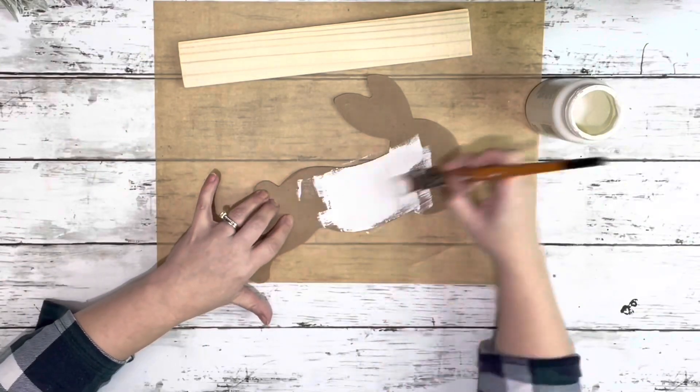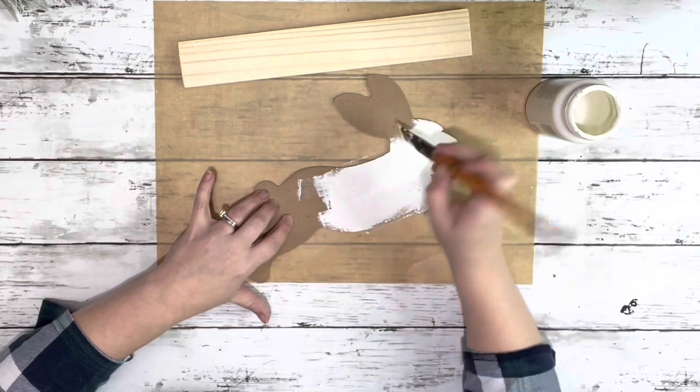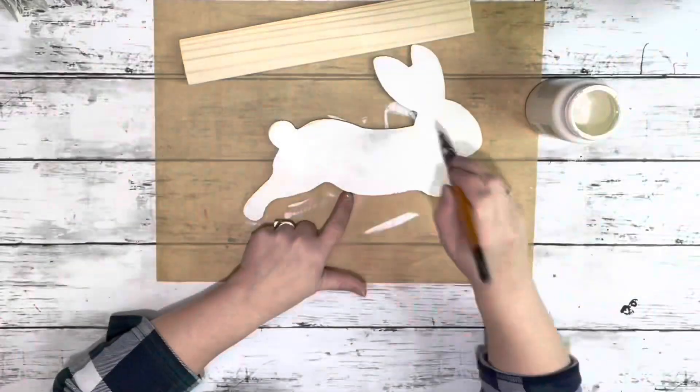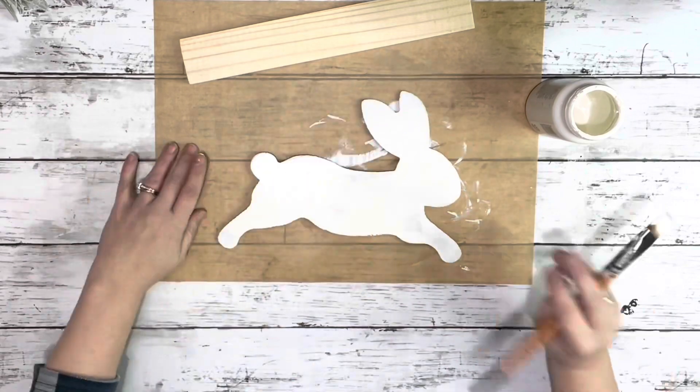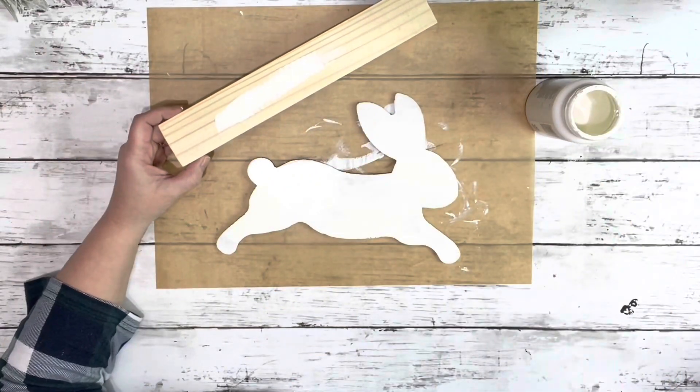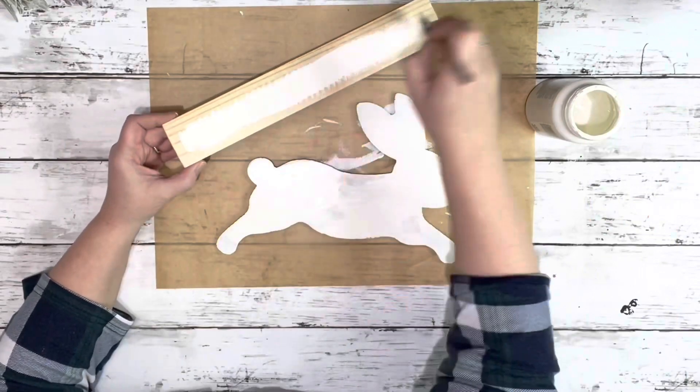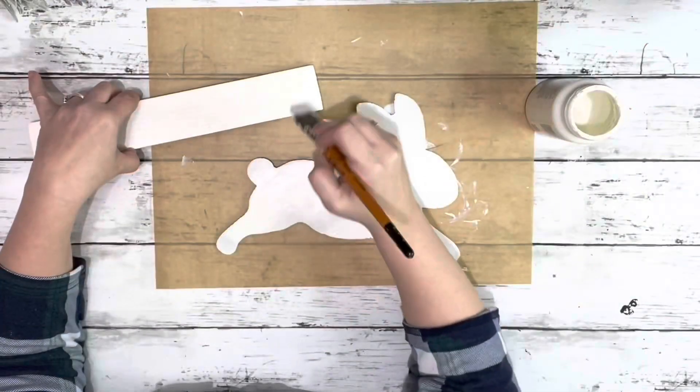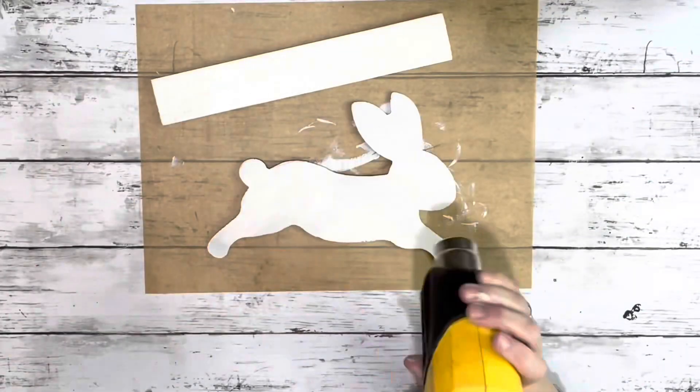I used chalk paint in the color plaster and covered the entire bunny front and back with that. I did two coats and then I also painted the piece of wood with the chalk paint, just painting the top on that. Then I used my heating tool to speed up the drying process.